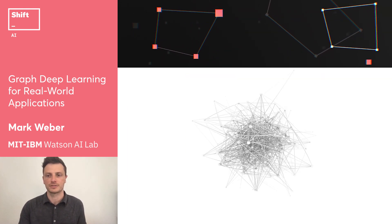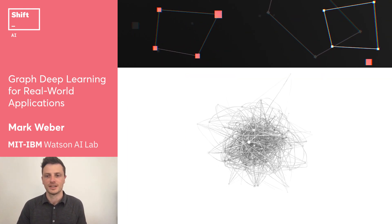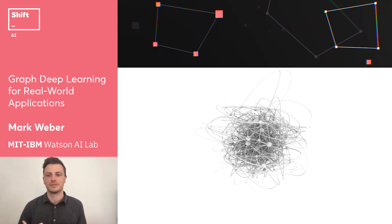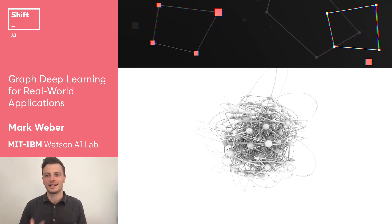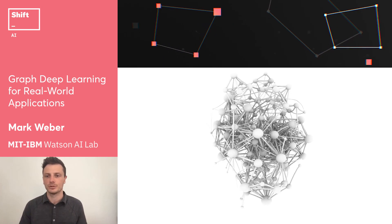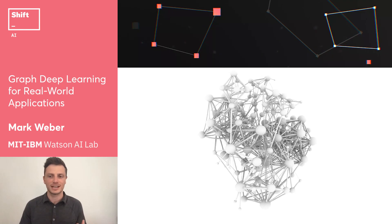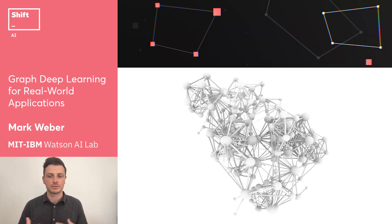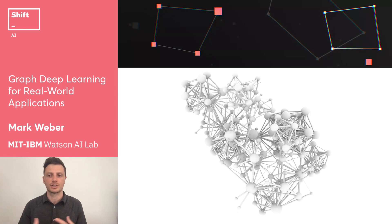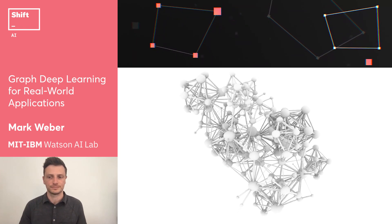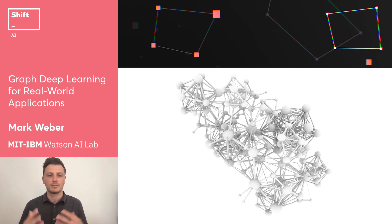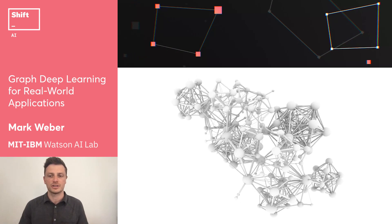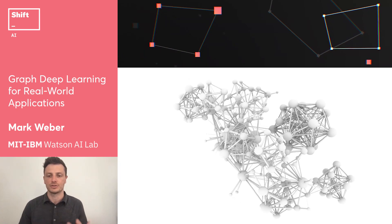First, let's talk about graphs. Imagine trying to reason about something without any context. It's possible, but your understanding will be limited and brittle. That's because relationships between things give us critical information. What's more is that in complex systems, these relationships are always changing — the graphs are always growing.